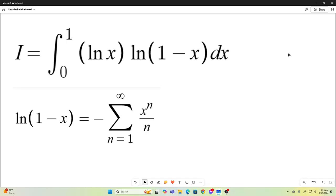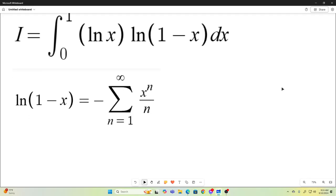First thing, we are going to recognize that the following is true. The natural log of 1 minus x is equal to this sum. Negative sum as n goes from 1 to infinity of x to the n over n. That's a fairly well-known sum right there.